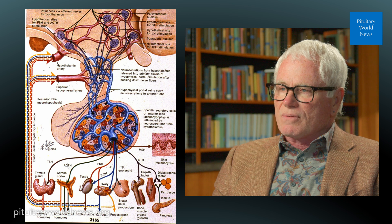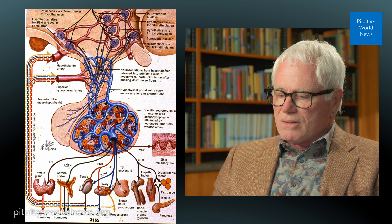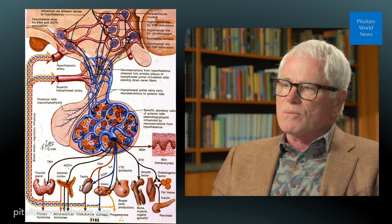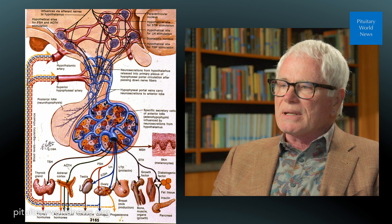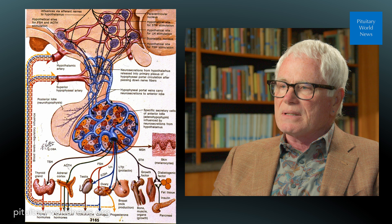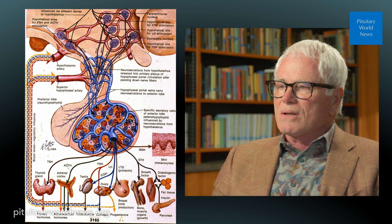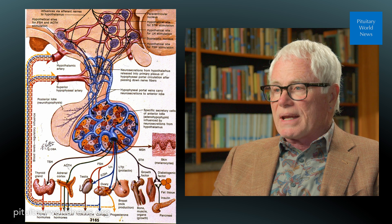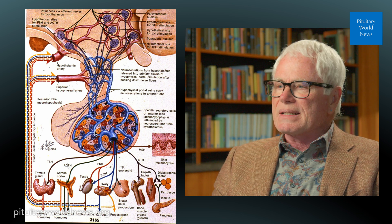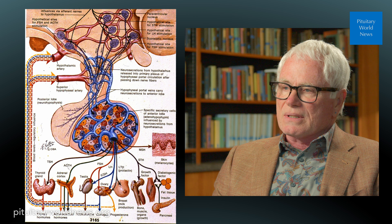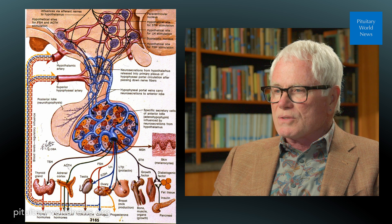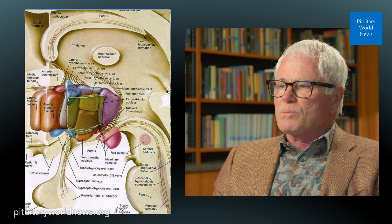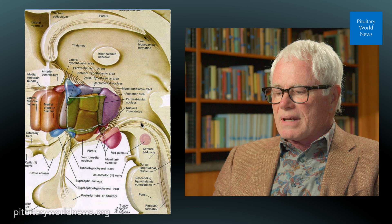There is a very rich blood supply. This is an interesting portal system in the body where arteries come in, they break up into capillaries, and these hormones from the hypothalamus are dumped into the median eminence. Through long and short portal vessels, those hormones are carried to the pituitary, where the veins break up into another set of capillaries and the pituitary cells are bathed with these releasing hormones from the brain, and their hormone output from the pituitary cells is affected.